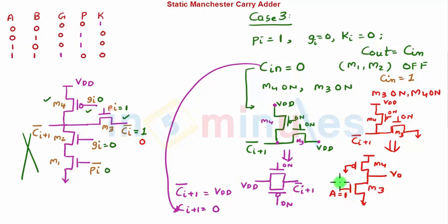If A is 1, M3 is ON and M4 is ON. When we discussed the pseudo-inverter, M4 tries to pull its output towards VDD, whereas M3 tries to pull it towards ground. When A equals 1, we want our output to be 0, meaning M3 should be stronger than M4.